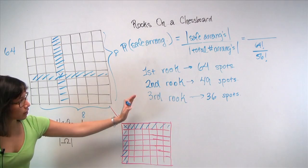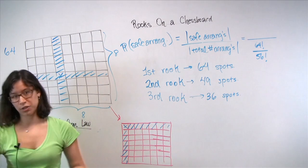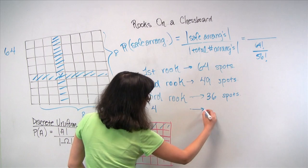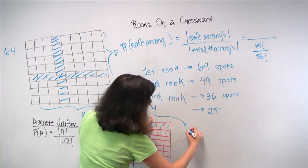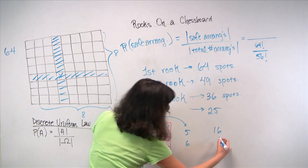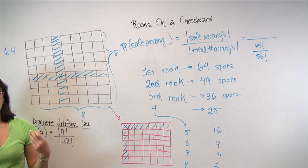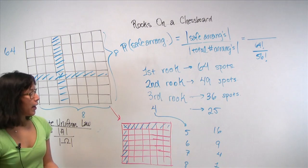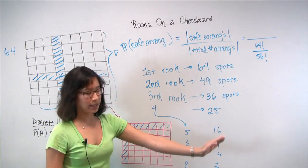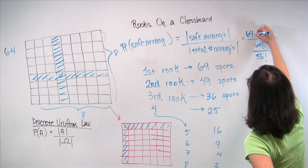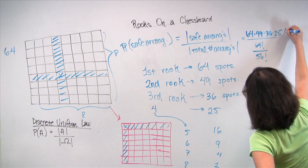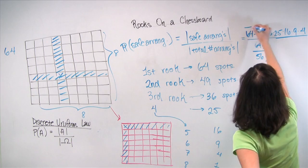For the numerator, we only need to count the number of safe arrangements. We can place rooks sequentially. How many spots are there for the first rook that are safe? Nobody is on the board yet, so it's 64. But now, let's say we put our first rook here. Everything in the column and row that I'm highlighting in blue is no longer an option. Where can our second rook go? If you cut off this cross and slide the pieces back together, you're left with a seven by seven chessboard with 49 spots.